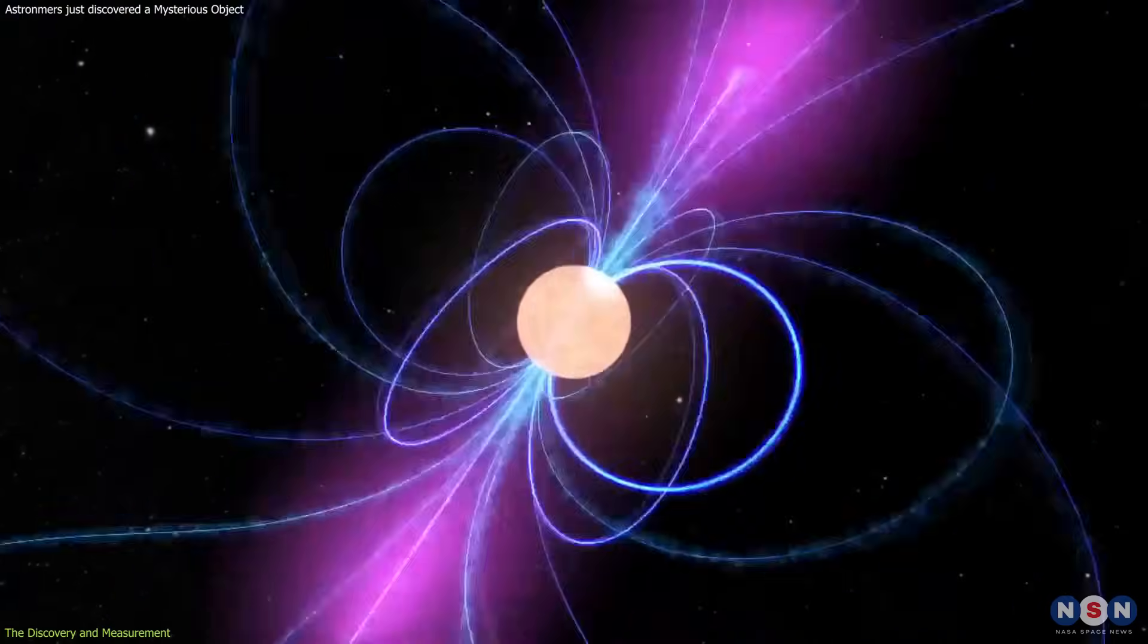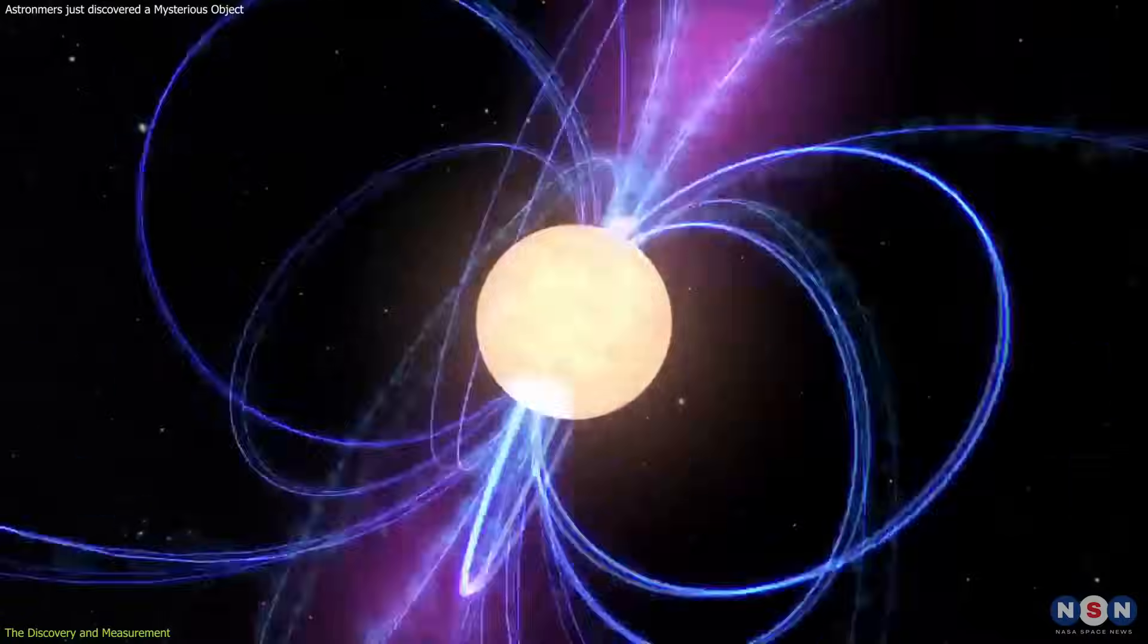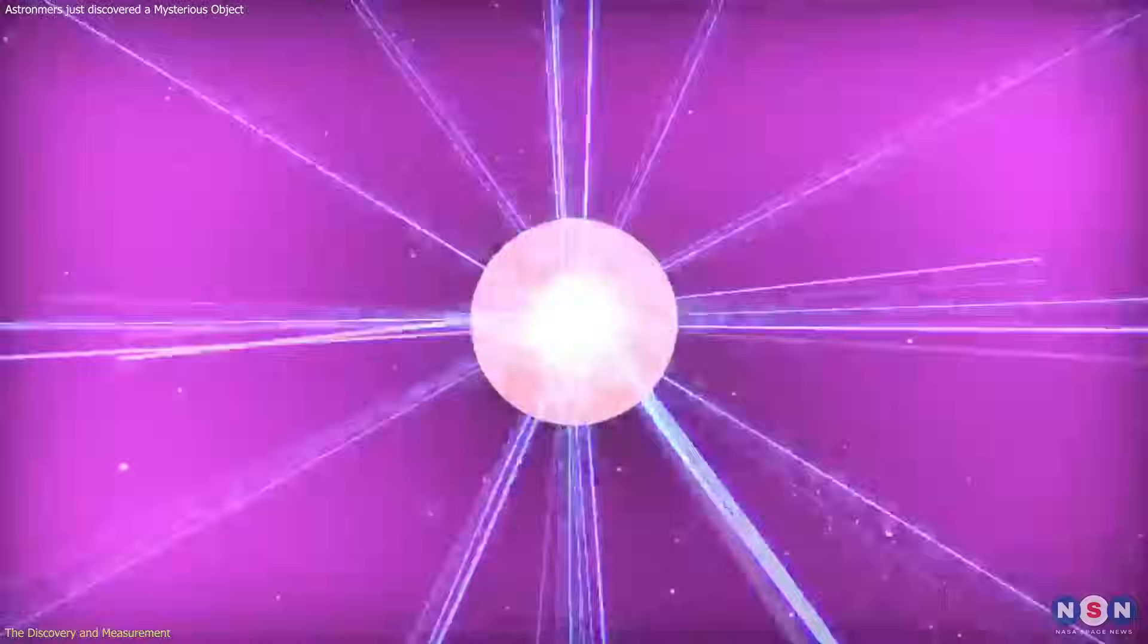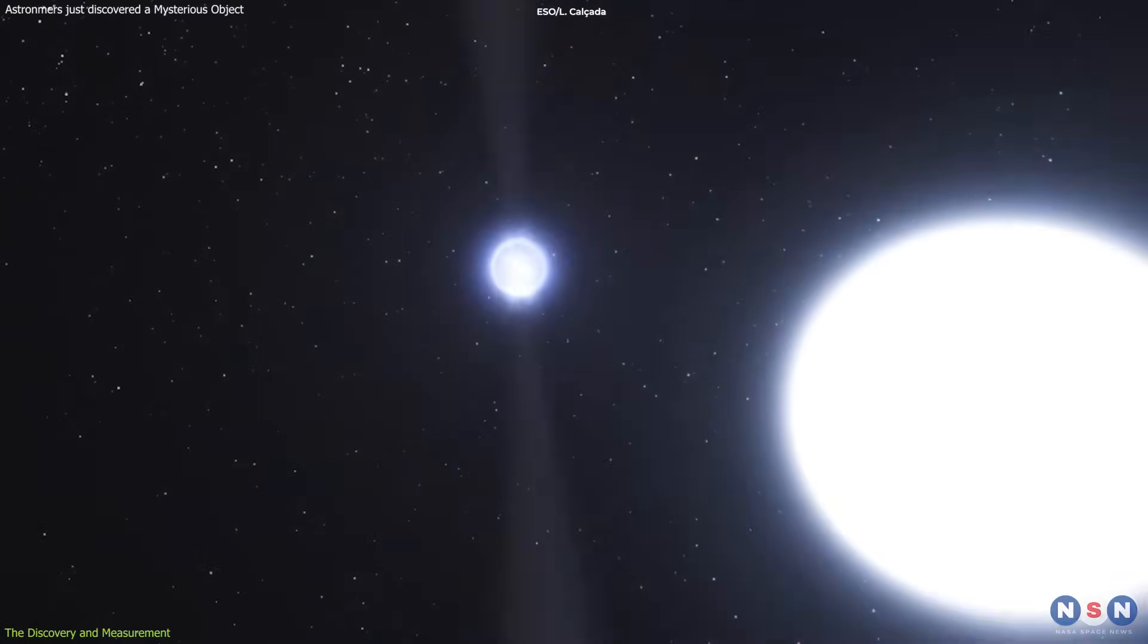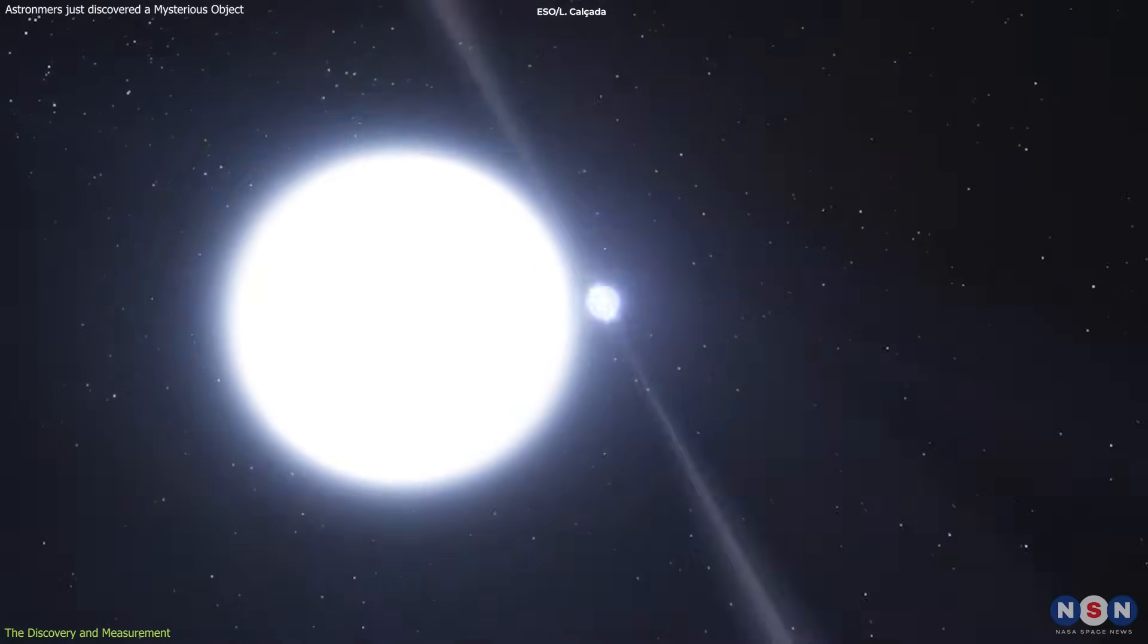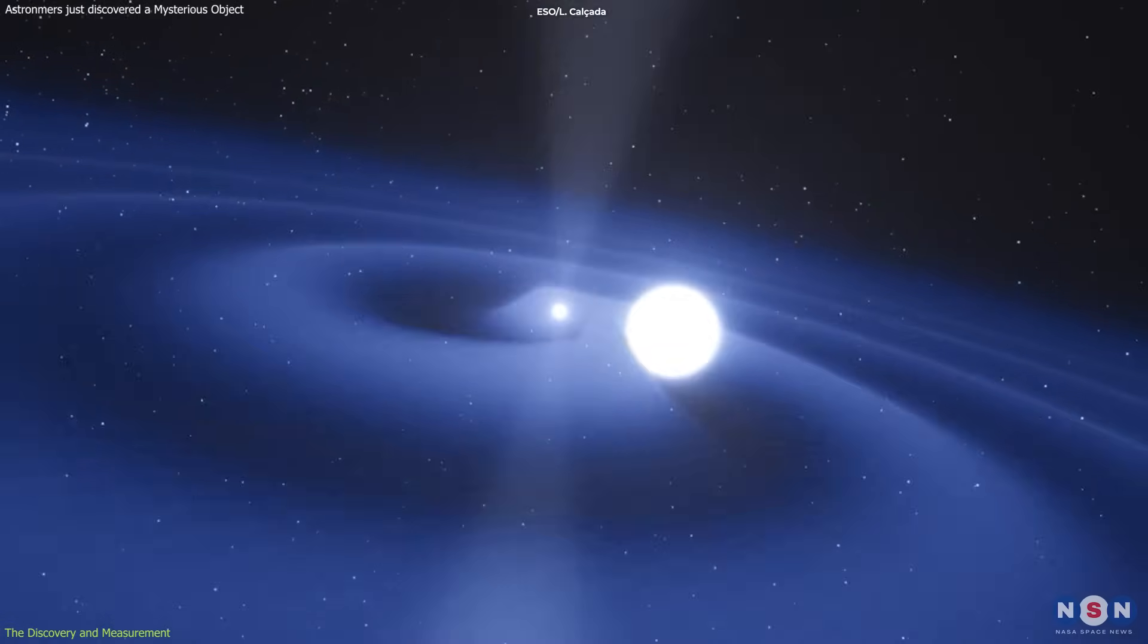A millisecond pulsar is a neutron star that spins very fast, up to hundreds of times per second, and has a strong magnetic field. However, the pulsar PSR 4002E is not alone. It has a companion object that orbits around it once every seven Earth days.